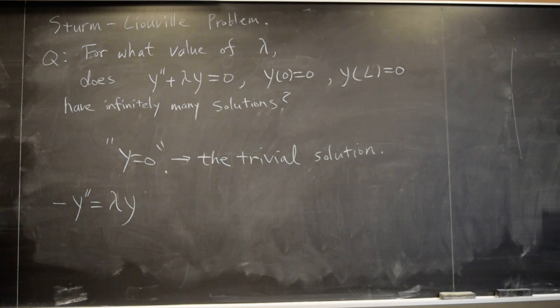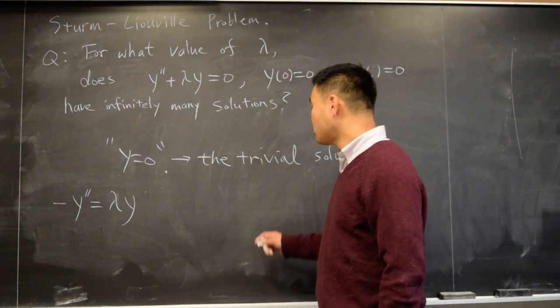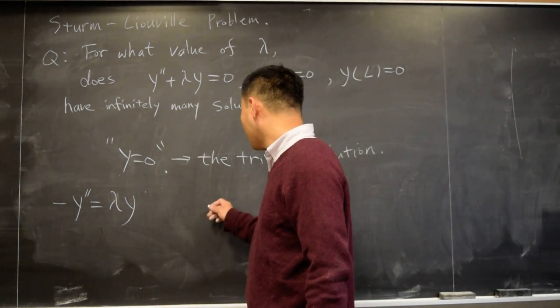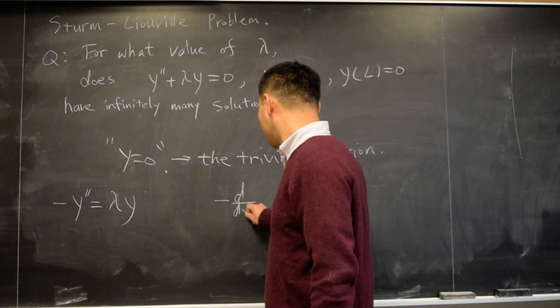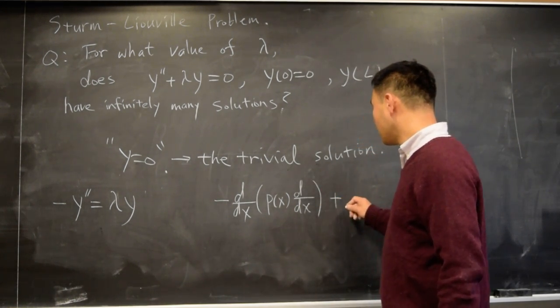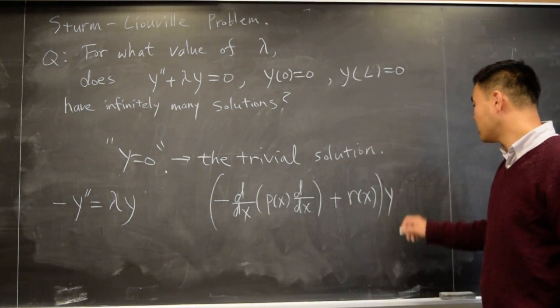And this is still not the most general version. The most general version is -d/dx(p(x)dy/dx) + r(x)y = λy.